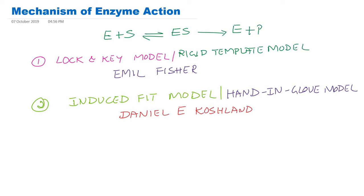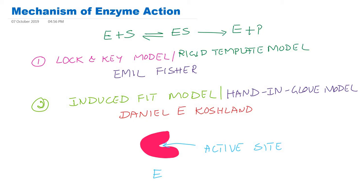To understand this mechanism of enzyme action, imagine this is an enzyme. This enzyme has a specific site where the substrate can bind, and this region is called the active site. I will make a separate video for active site. The active site is a region that binds the substrate during the enzymatic reaction.